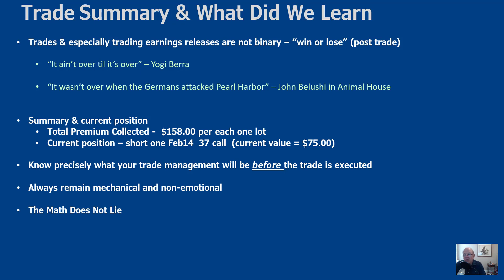To summarize: total premium collected was about $1.58 per one lot, less roughly $9 in commission. After all adjustments, I'm left with a free $31/$30 put spread expiring worthless, and one Feb 14th $37 call trading around 75 cents. Taking 75 cents off the $1.50 collected leaves about $75 profit on the trade — not bad for something many traders would have closed at a loss in a panic right after the open.